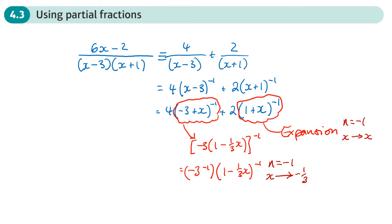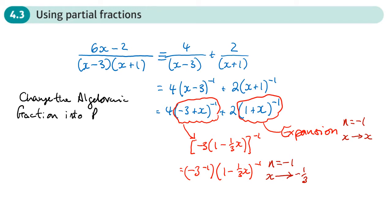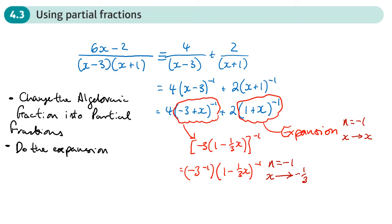So the process is: change the algebraic fraction into partial fractions — which is what you do in chapter one — and then once you've done that, perform the binomial expansion on the partial fractions, on those two or three smaller pieces.